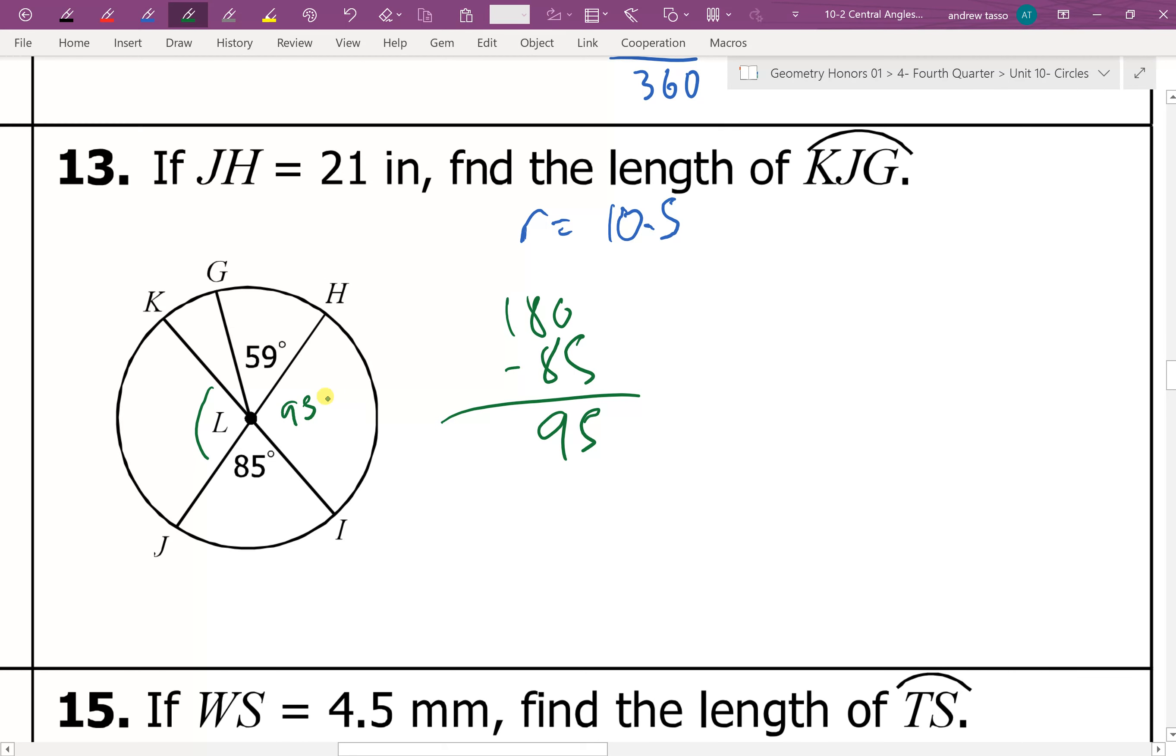Now, if you notice here, this would also be 95 because of vertical angles. And then I can take a look at these three and demand that they have to add up to 180. So if I look at what I have so far, and then subtract the result from 180, I'll see that the missing piece in the center has to be 26.